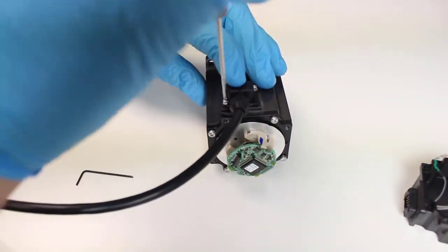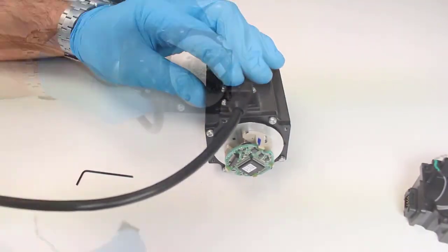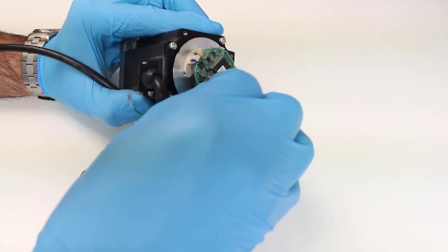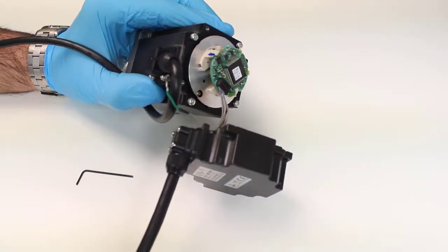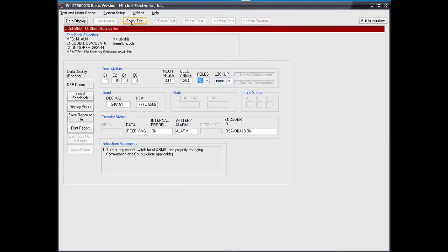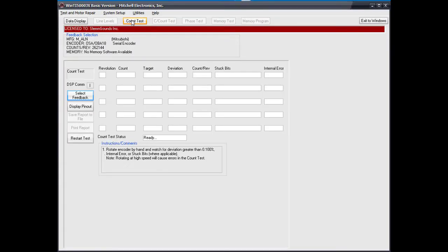Now connect the motor's power and feedback cables to our test equipment. Perform a count test in the WinTI5000JX software by rotating the motor four times. This will confirm the encoder is testing well.